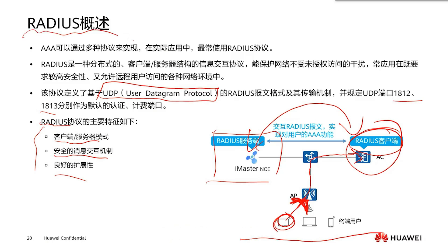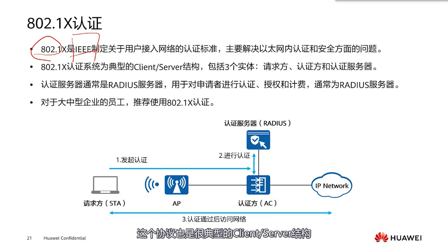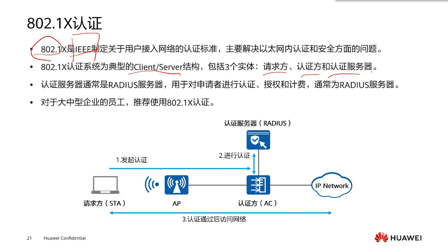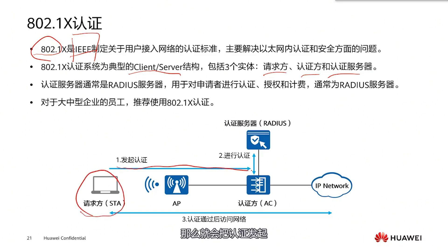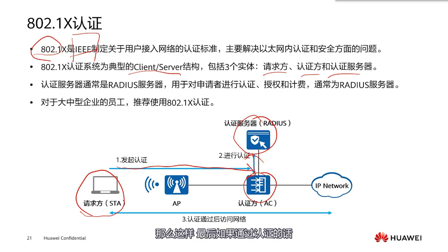Next, let's look at 802.1x authentication. When you see 802, you know it's a protocol developed by the IEEE organization. It's a typical client-server structure including the requester, the authenticator, and the authentication server — which is the RADIUS server. Our user terminal is the requester. The user wants to access the internet and initiates authentication. The AC goes to RADIUS, acting as the RADIUS client, and the authentication server is the RADIUS server. If authentication is passed, the AC grants access and the user terminal can communicate with the network. This is 802.1x authentication.